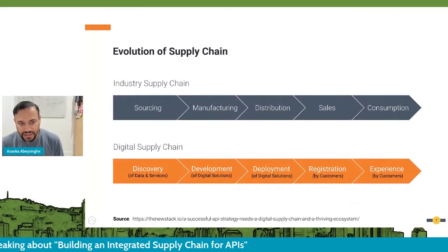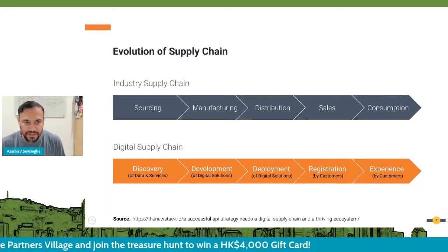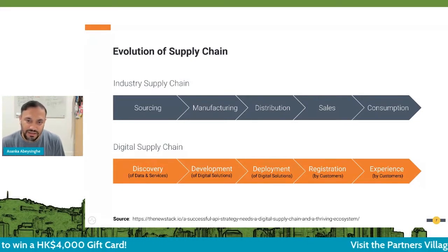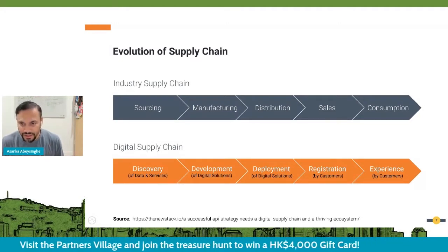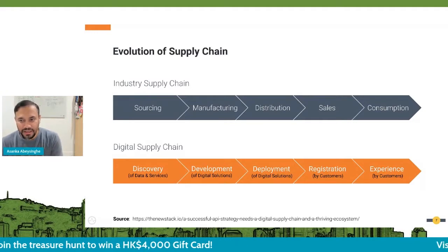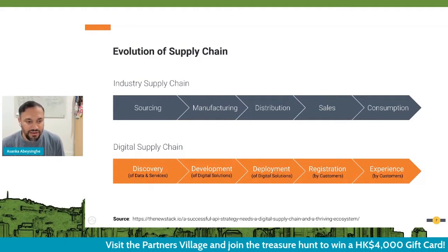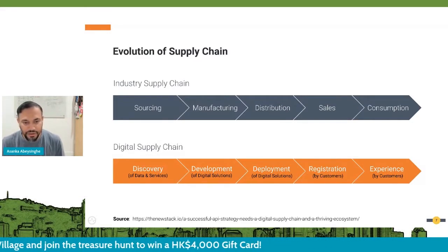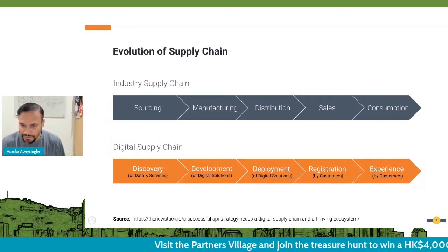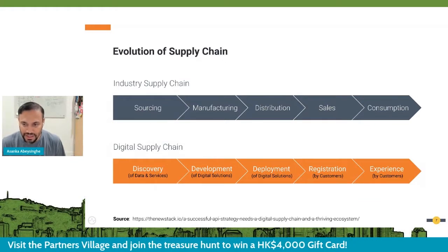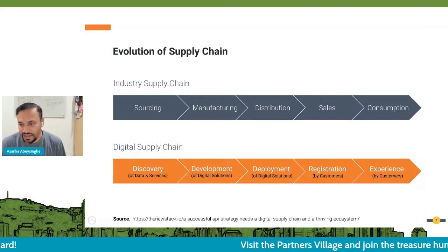Now we are in a more digital era. As we saw with product evolution, products are moving toward more digitalization, and with that, the supply chain has changed. Traditionally, an industry supply chain contains five stages: sourcing, manufacturing, distribution, sales, and consumption. But with digital coming into the picture, it has changed drastically. Now you discover ideas, design a digital product, get into the deployment stage, customers subscribe or register for these products, get an experience, provide feedback, and you go through this cycle again and again. That is how the digital supply chain looks.